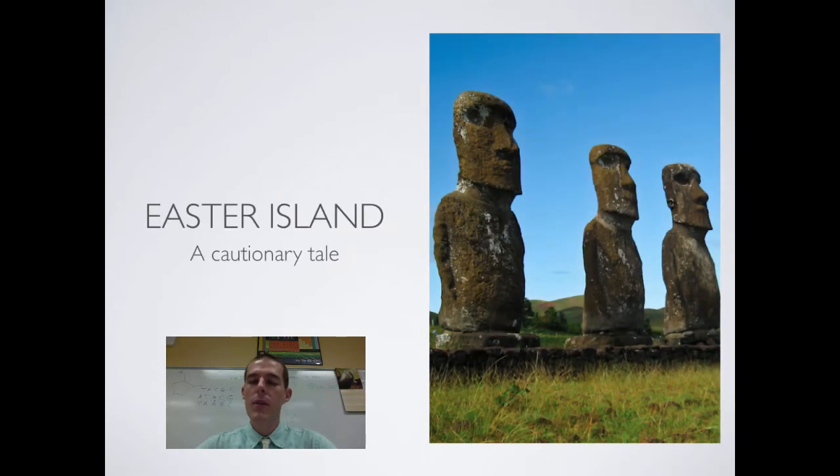One example that environmental scientists look to when talking about sustainability is the case of Easter Island. Easter Island is an island out in the Pacific, and it was inhabited by Pacific Islanders up until the 1870s. The island was initially colonized by people who had boated to the island from other Pacific Islands. When those first people moved to the island, it was a lush rainforest covered island with lots of trees everywhere, plenty of food, and everybody was happy.